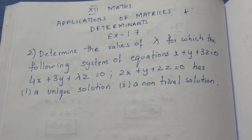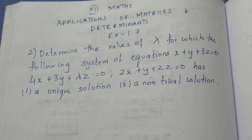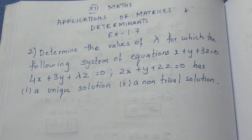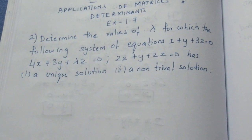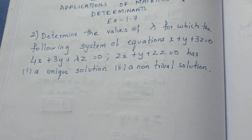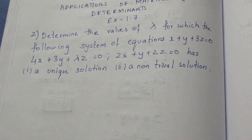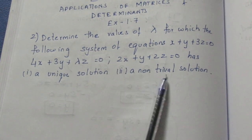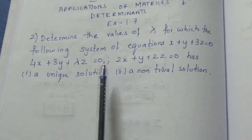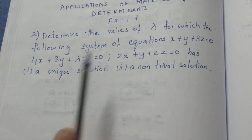Hello viewers, I am Ikely. In 12th grade applications of matrices and determinants, exercise 1.7, second sum. The question is: determine the values of lambda for which the following system of equations — x plus y plus 3z equals 0, 4x plus 3y plus lambda z equals 0, 2x plus y plus 2z equals 0 — has a unique solution or non-trivial solution.